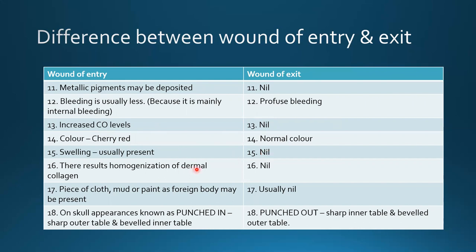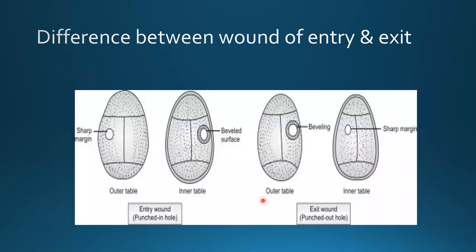Increased carbon monoxide levels cause cherry red color in the wound of entry; wound of exit shows normal color. Stippling present in wound of entry, absent in exit. Homogenization of dermal collagen in wound of entry, absent in exit. Pieces of cloth, mud, or paint as foreign bodies may be present in the wound of entry. In the skull, wound of entry shows punched-in sharp outer table and beveled inner table; wound of exit shows beveled outer table and sharp inner table.